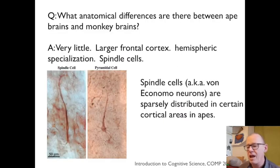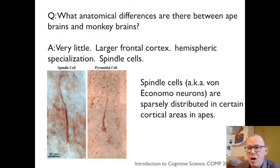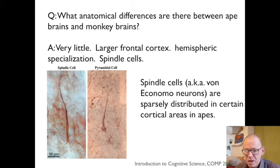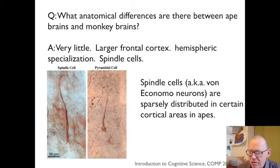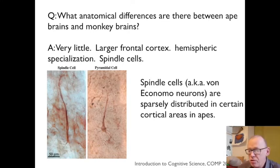These are interesting because they are pretty much the only cell type that you find in ape brains that you don't find in monkey brains. I mentioned before that you shouldn't confuse apes with monkeys. Apes includes humans, gorillas, orangutans, chimpanzees, and bonobos. And all of these apes have spindle cell neurons to different degrees, and monkeys do not.